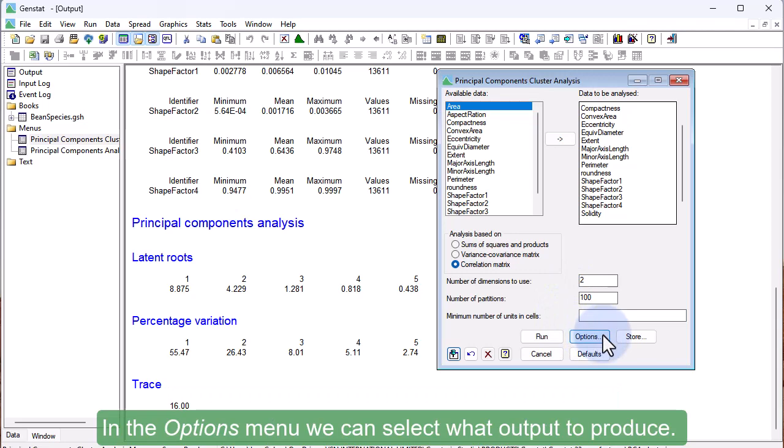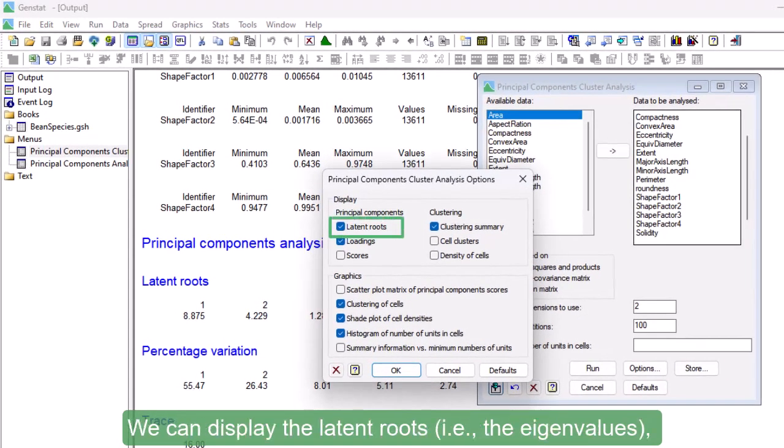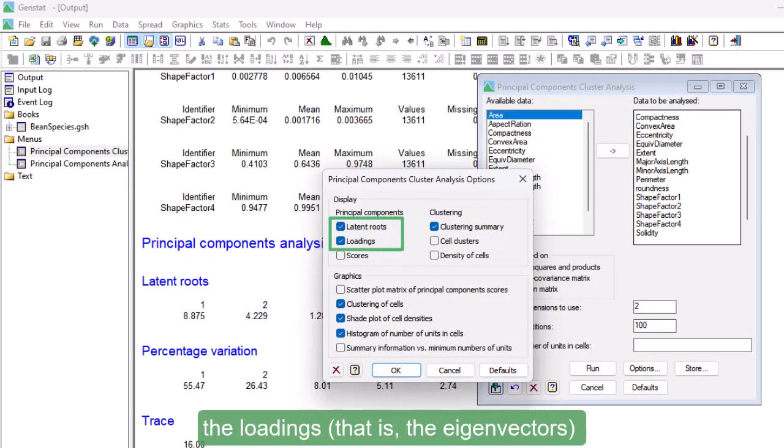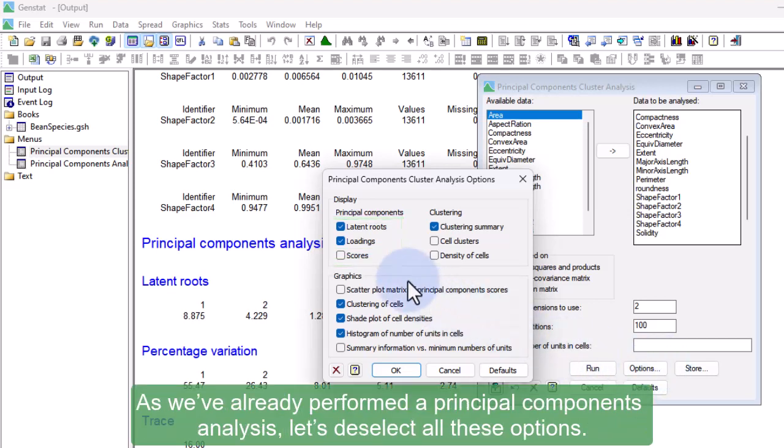In the Options menu, we can select what output to produce. We can display the latent roots, i.e., the eigenvalues, the loadings, that is the eigenvectors, and the scores from the Principal Components analysis. As we've already performed a Principal Components analysis, let's deselect all these options.